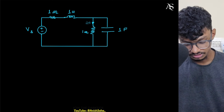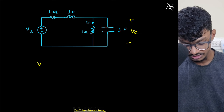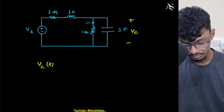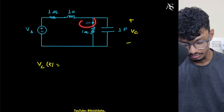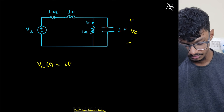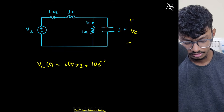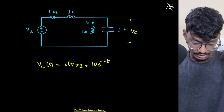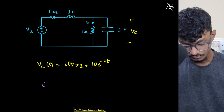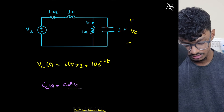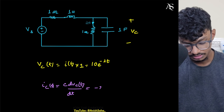They've given me i(t), so let me mark the resistor voltage as Vc. So Vc(t) = i(t) × 1 = i(t). Since i(t) = 10e^(-2t), this is my Vc. Now Ic(t) = C · dVc/dt. With C = 1, differentiating gives Ic(t) = -20e^(-2t).